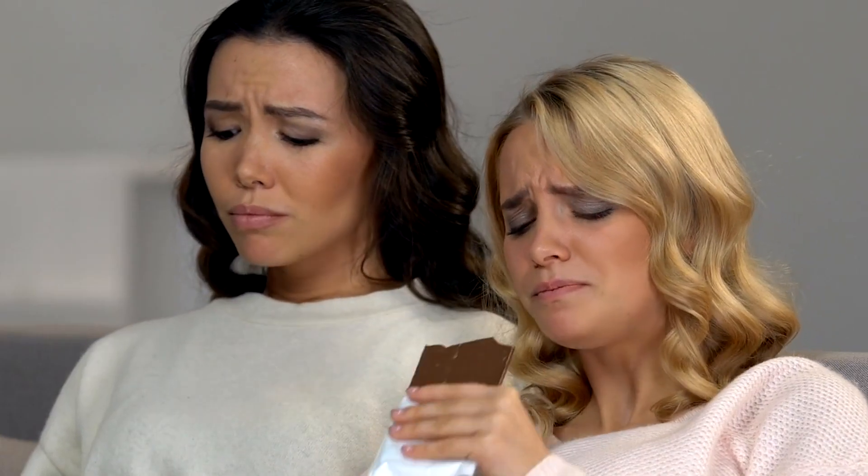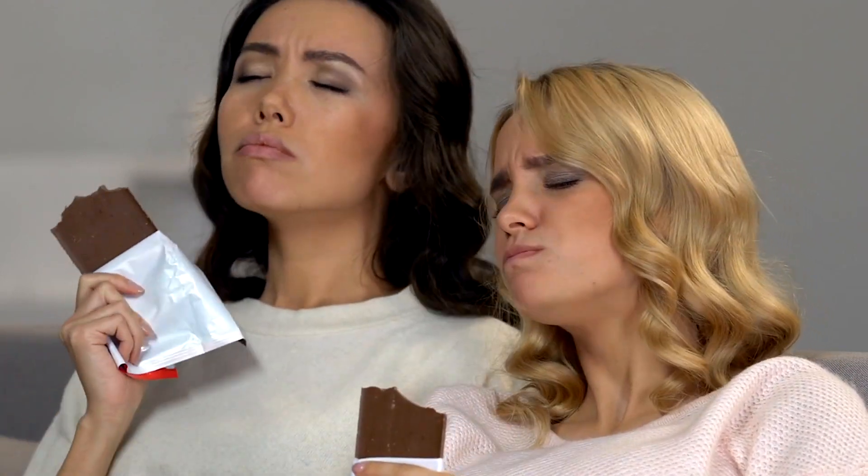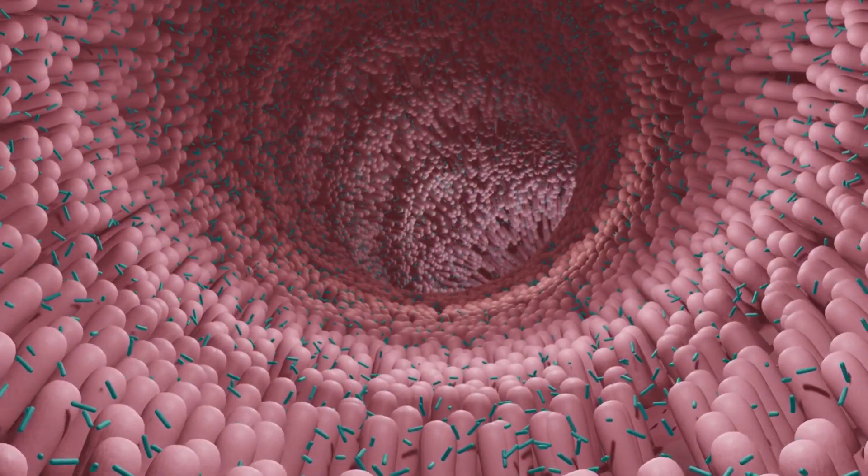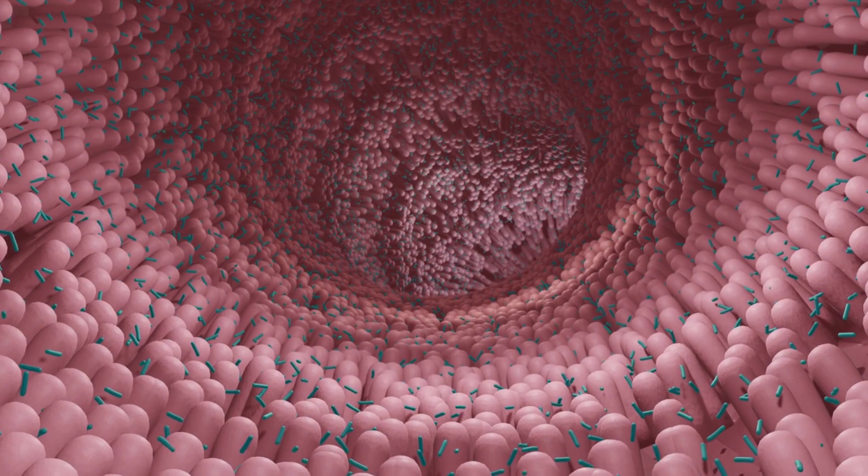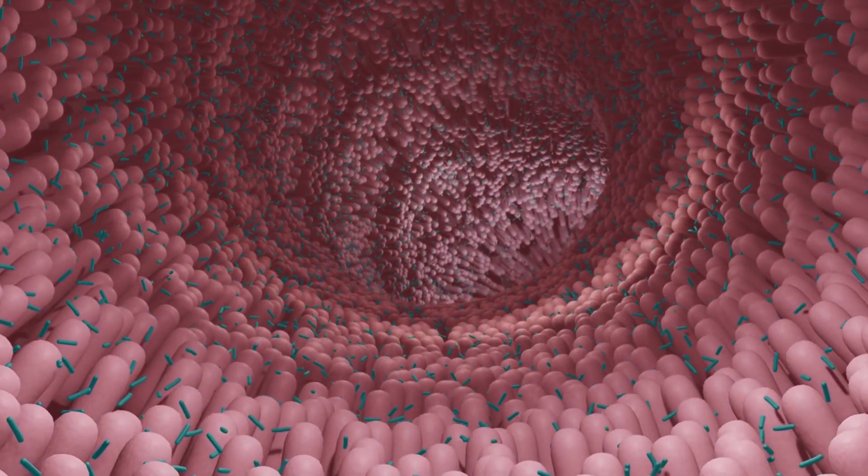Through the neurotransmitter telephone, gut microbes influence serotonin production, impacting our mood and emotional well-being. A healthy and balanced gut microbiota can contribute to optimal serotonin levels, promoting a positive mood and reducing the risk of mood disorders like depression and anxiety.